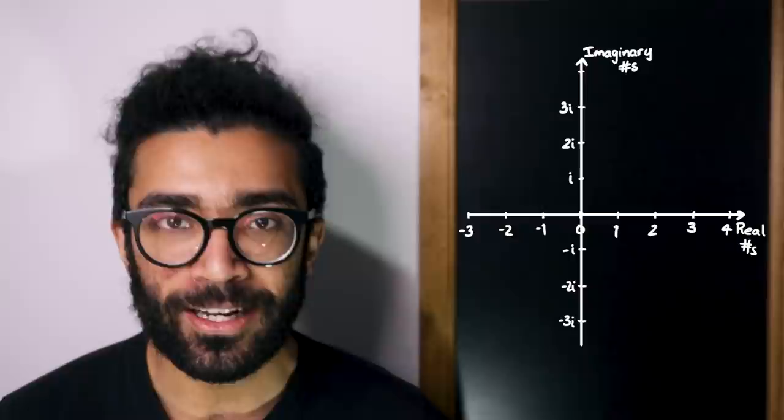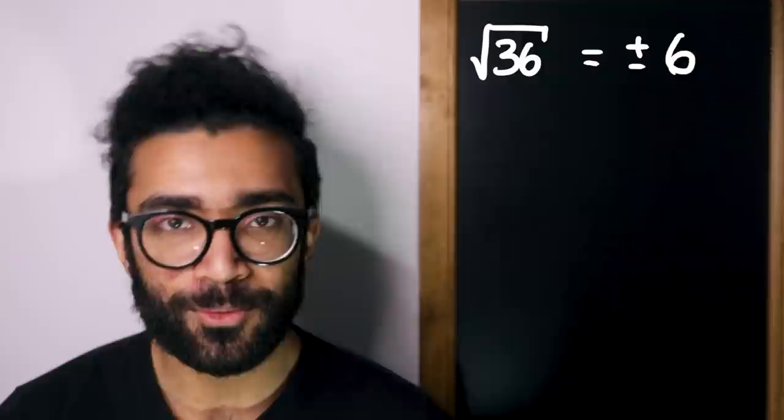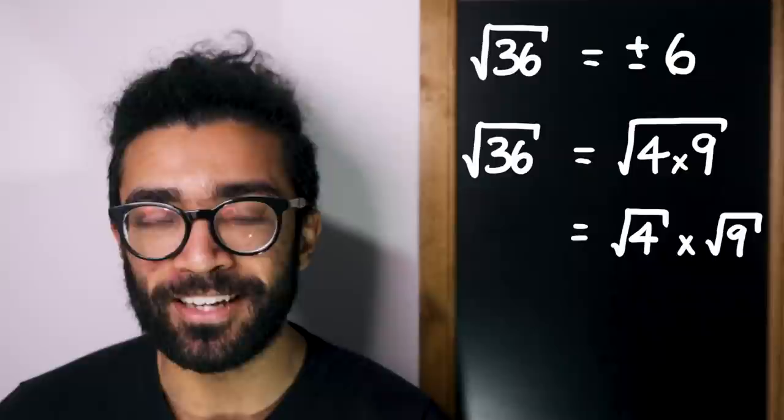Here is an example of how this new axis works. If we think about a conventional square root, the square root of a positive number like 36, we obviously know that the square root of 36 is 6, but we could also choose to write the square root of 36 as the square root of 4 multiplied by 9. And we can also equivalently write this as the square root of 4 multiplied by the square root of 9, which ends up being 2 multiplied by 3, which is 6.